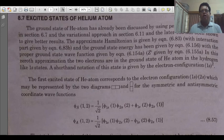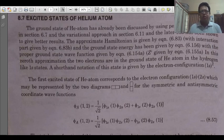The Ground State of the Helium Atom was already discussed in the last lecture using the Variational Approach, where we saw the Hamiltonian relation in which the third term is due to the interaction energy of the electrons. Now in this lecture, we are going to learn about how the variational principle or method is applied for the excited state of the helium atom.